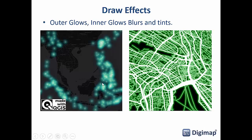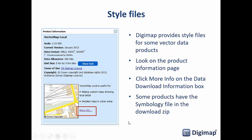Draw effects let you do really cool things by adding blurs, inner glows, outer glows, and drop shadows. On the left is earthquake data where dots are scaled by magnitude with different coloured blurs added to make them look like fireflies. On the right is Strava data with lines thickened based on the number of times someone has cycled or run that route, with a glow added on the outside for extra visual impact.